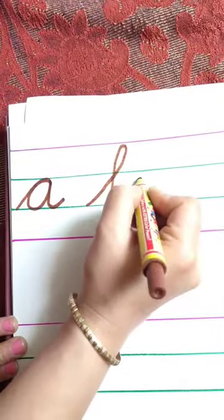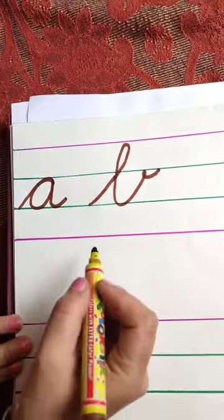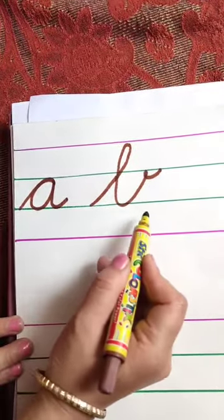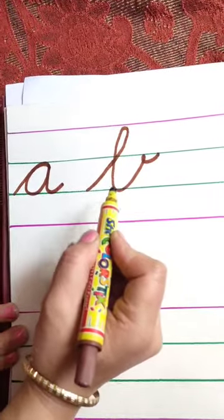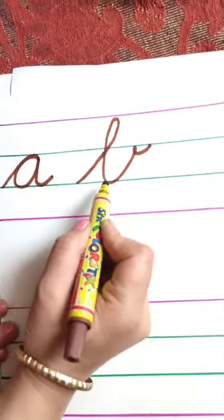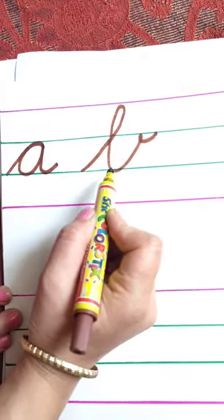This is B. The sound of B is B. B, B. B, B, Ball. B, B, Bat. B, B, Balloon.